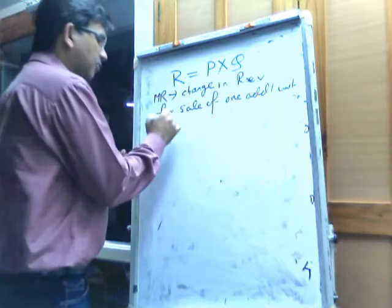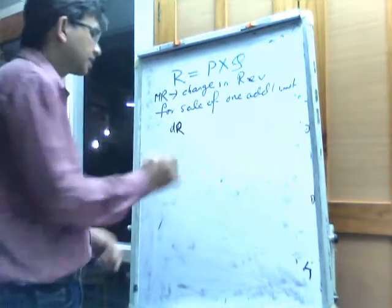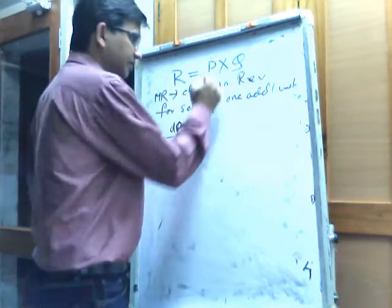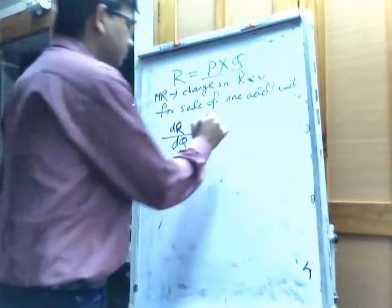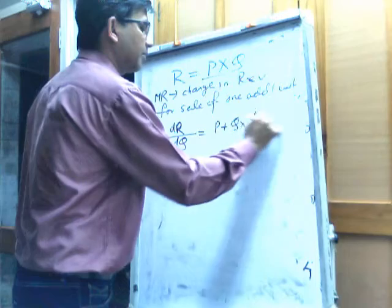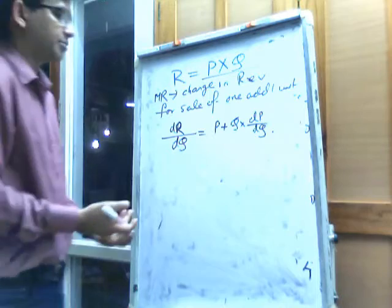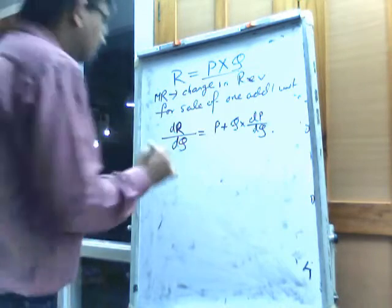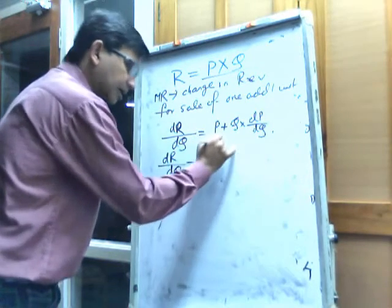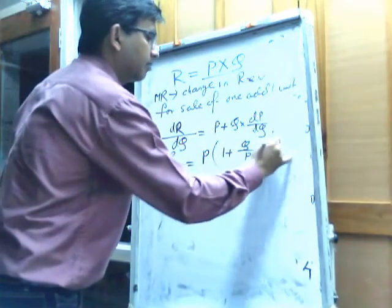To find marginal revenue we differentiate total revenue with respect to quantity: dr by dq. Differentiating p·q using the product rule gives p plus q multiplied by dp by dq. This is the formula for marginal revenue. We can rewrite this as p times the quantity 1 plus (q/p)·(dp/dq).